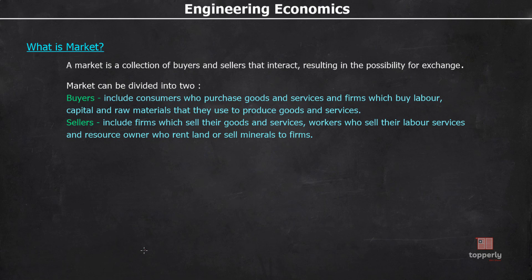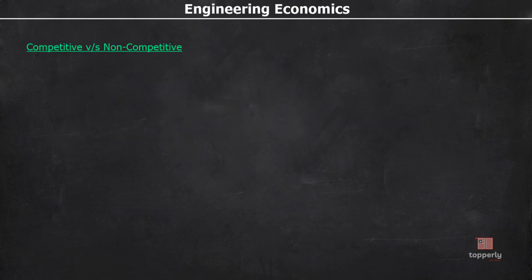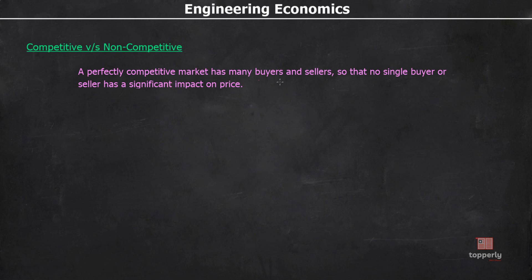A market can be classified into competitive and non-competitive markets. A perfectly competitive market has many buyers and sellers so that no single buyer or seller can significantly impact the price. For example, thousands of farms produce rice and thousands of buyers purchase it, so no single farmer or buyer can significantly affect the price. However, a competitive market doesn't necessarily require a large number of firms — for example, telecom companies in India price competitively among themselves to win customers.